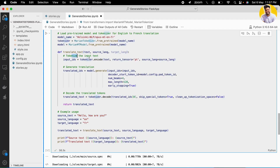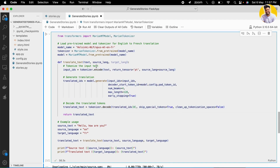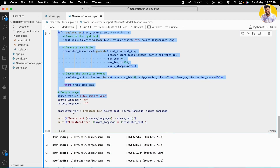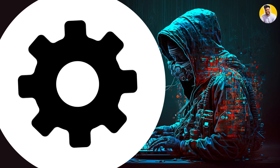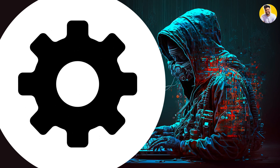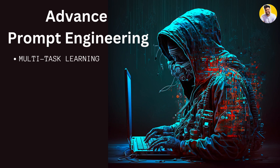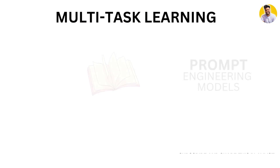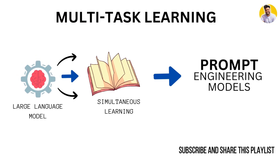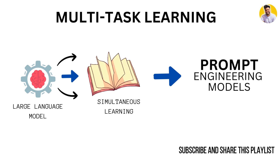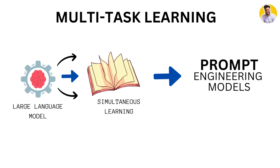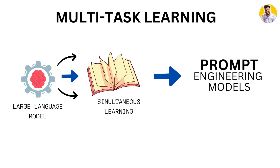In the previous section, we learned how to fine-tune pre-trained large language models for prompt engineering. In this section, we'll explore advanced techniques for fine-tuning them. One technique is called Multitask Learning, which involves training a model on multiple related tasks simultaneously. This can help the model learn more robust representations that can generalize to different use cases.